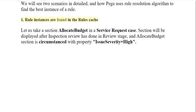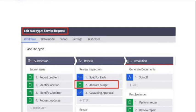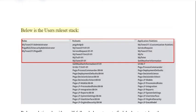Scenario 1: Rule instances are found in the rules cache. Let us take a section 'Allocate Budget' in a service request case. The section will be displayed after inspection review has been done in the review stage. The Allocate Budget section is circumstanced with the property issue severity equals high. A service request is raised and issue severity is medium. Below is the user's rule set stack.